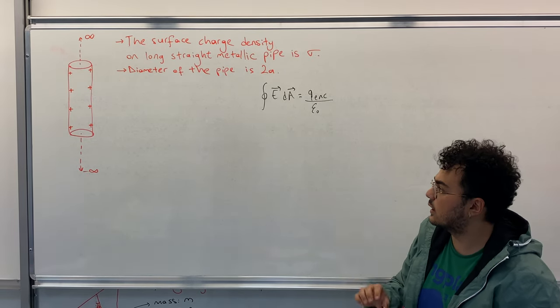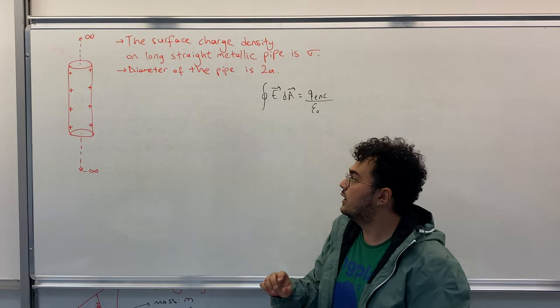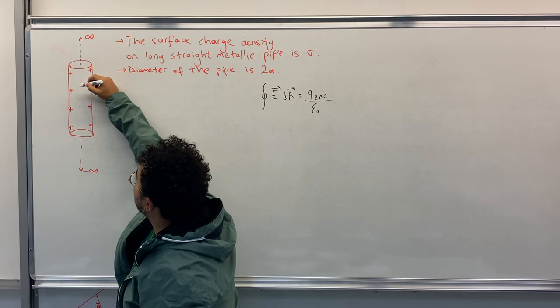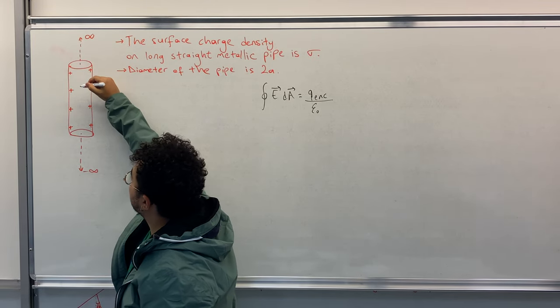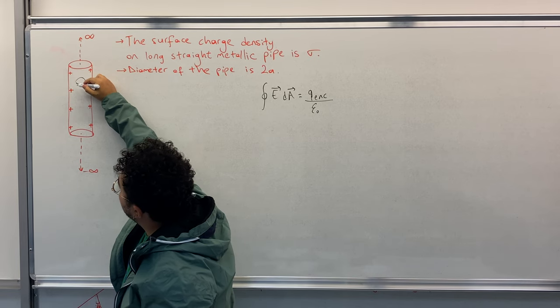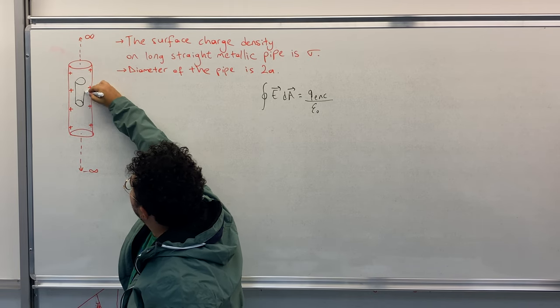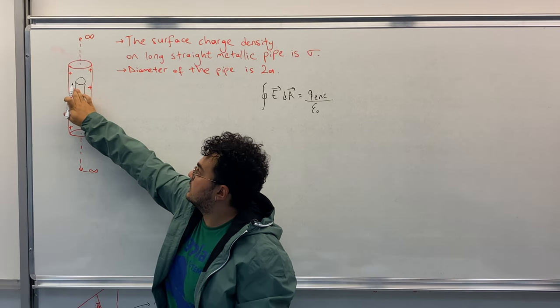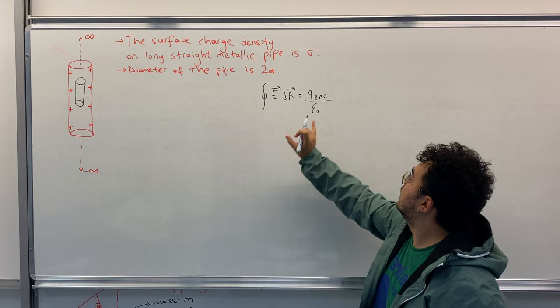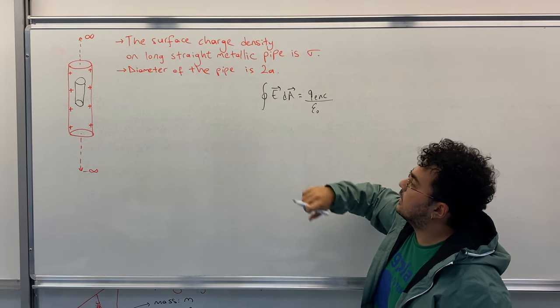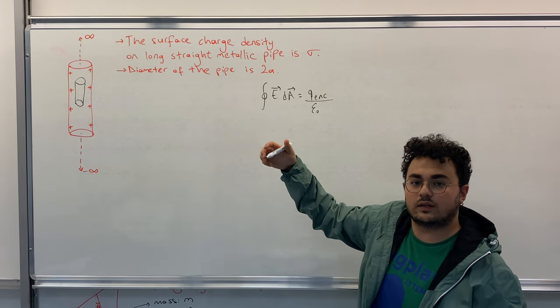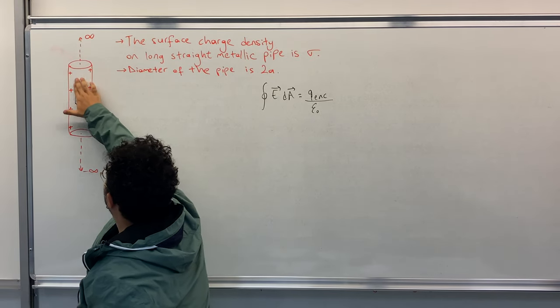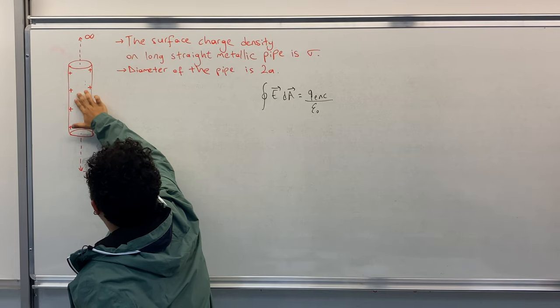So in order to have an electric field, we need to have charge inside a closed surface. For the inside of the pipe, for example, any closed surface, I will take a cylinder. Inside this closed volume there is no charge, so this is zero.